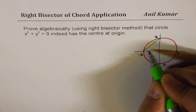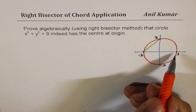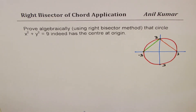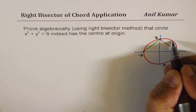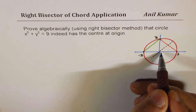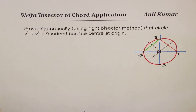The idea is to write down equations of right bisectors of two chords. We will take one chord shown in green, and another chord in quadrant 1 going through the x and y intercepts. Once we have these two chords, we will find the equations of their right bisectors. The right bisectors will meet at a point, and wherever they meet, that becomes the center.